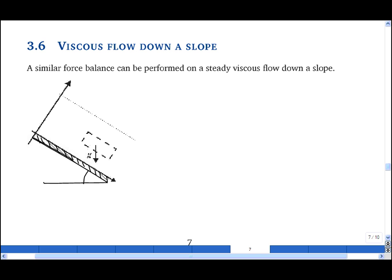One can perform a similar analysis for a free surface flow on a slope at angle theta with the horizontal. The analysis also needs to include a body force due to gravity as well as the viscous forces.